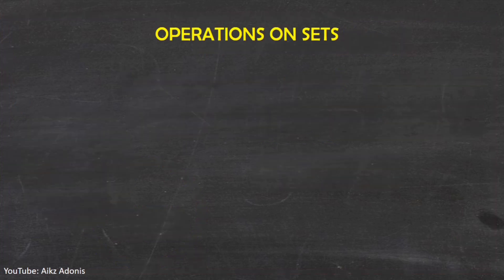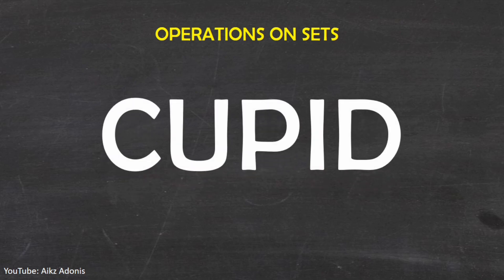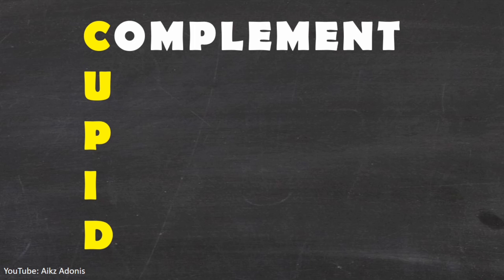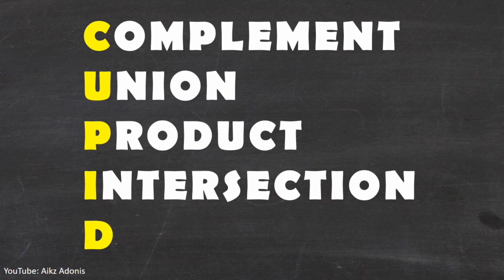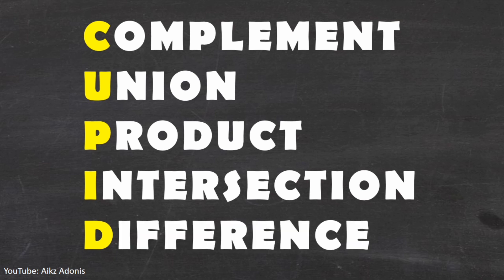To help you remember the set operations, let's have this acronym: CUPID. C stands for complement, U for union, P for product, I for intersection, and D for difference. So whenever you are asked what are the operations on sets, just remember CUPID: complement, union, product, intersection, and difference.